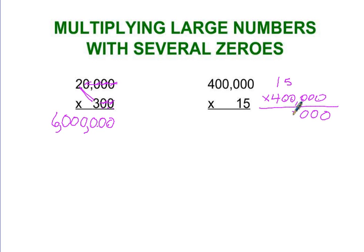I've got 1, 2, 3, 4, 5, and then I'm going to do 5 times 4 is 20, carry the 2, 1 times 4 is 4, plus 2 is 6.